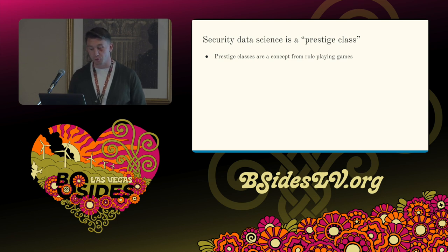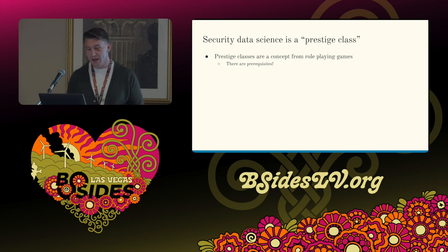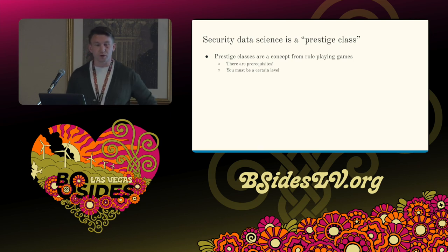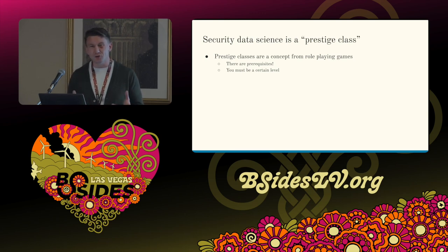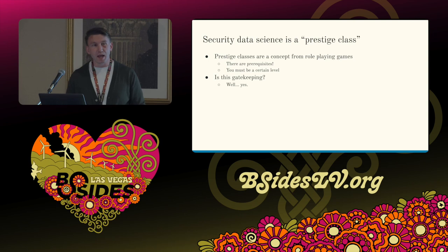When we think about security data scientists, especially data scientists who are interested in security, one point I like to make to aspiring new hires is that it's kind of a prestige class. For those who are not nerds, prestige classes are a concept from role-playing games. There are prerequisites to reaching a prestige class — you have to be a certain level, have certain attributes and traits, and be an existing class. It's not an entry-level thing. And when I say that, I get reactions like, is this gatekeeping? Yeah. Sorry. Yes, it is.